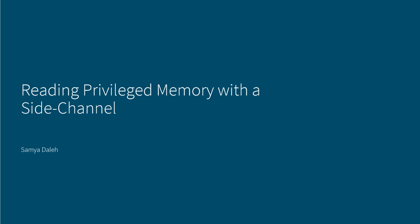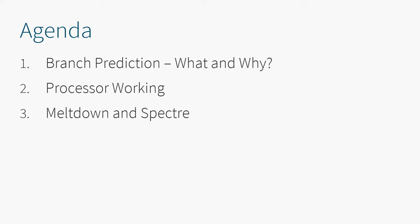Based on the recent discussions in the past few months about Meltdown and Spectre, these security issues, here is my presentation about how to read privileged memory with a side channel. First I will introduce you to the concept of branch prediction, which is important in that respect. Then I will show you how a modern computer works, and based on that I can explain in more detail how Meltdown and Spectre work.